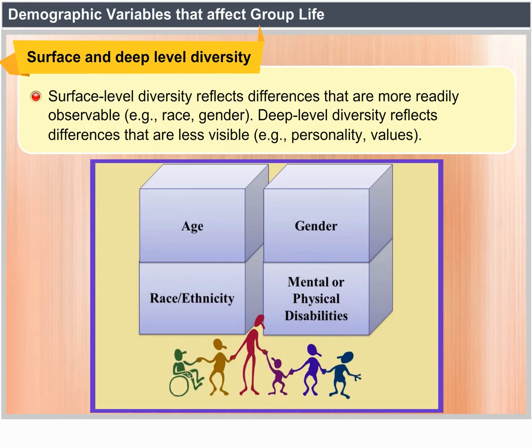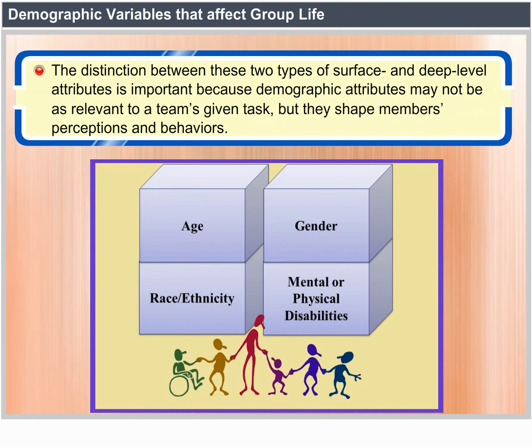Surface level diversity reflects differences that are more readily observable, for example race and gender. Deep level diversity reflects differences that are less visible, for example personality values. The distinction between these two types is important because demographic attributes may not be as relevant to a team's given task, but they shape members' perceptions and behaviors.